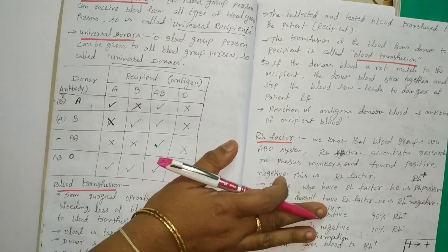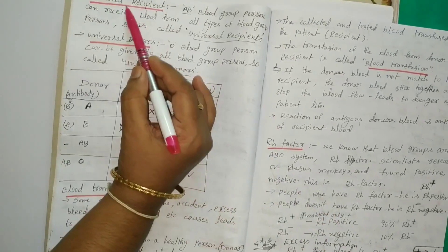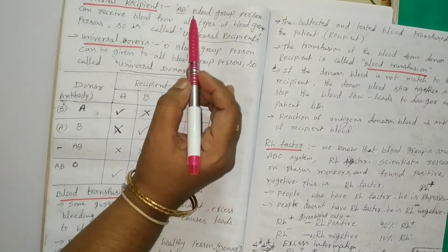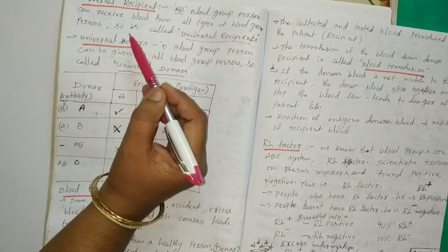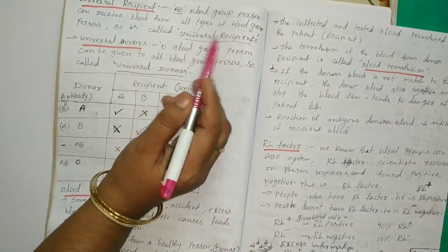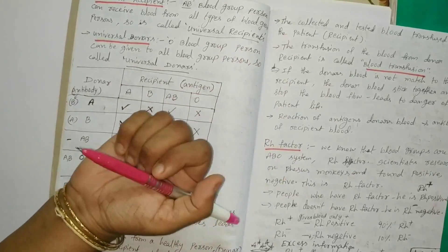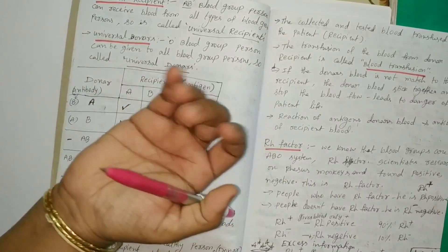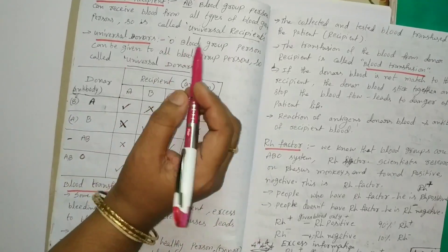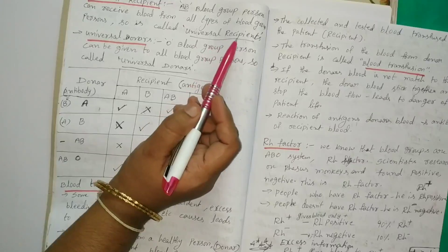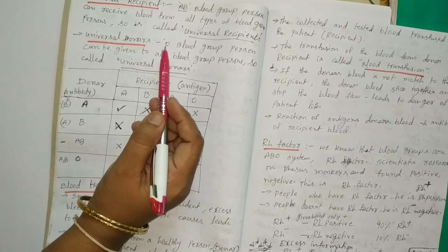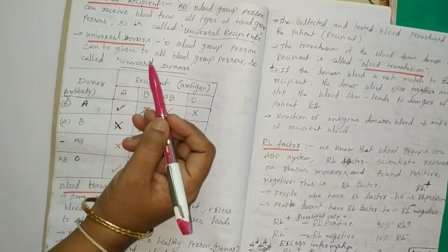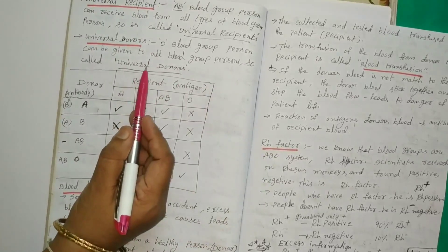What is a universal recipient? AB blood group person can receive blood from all types of blood group persons, so he is called the universal recipient — he takes blood from others but doesn't give. What is a universal donor? O blood group is the universal donor because O blood group person can give blood to all blood group persons.